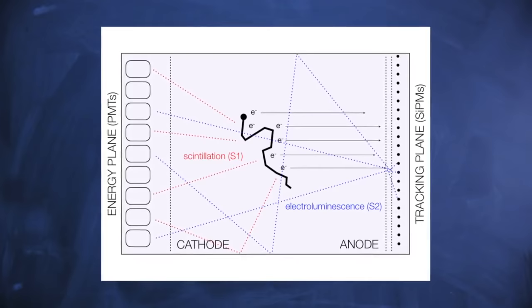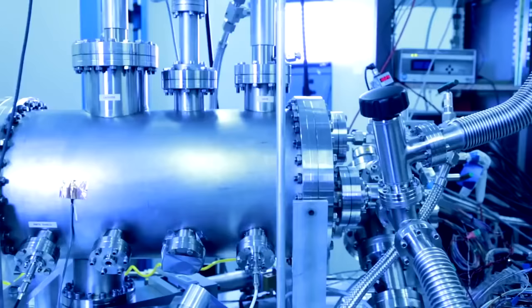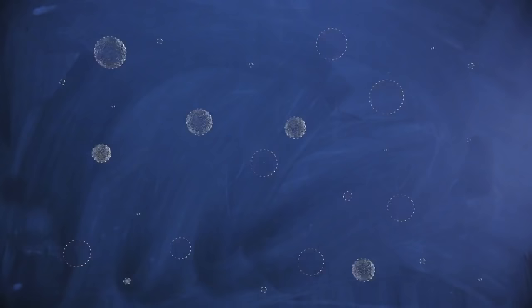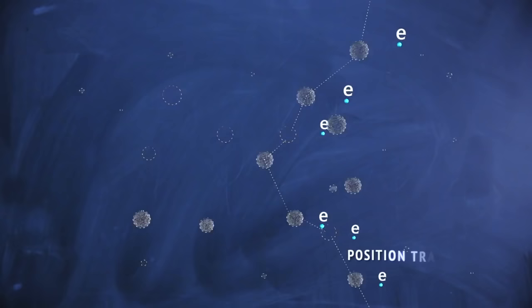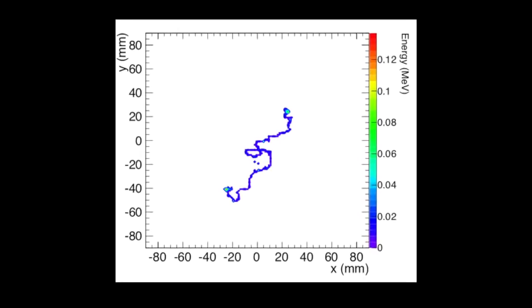NEXT is a simple idea. This chamber is a pressure chamber. Basically, it's a pot at high pressure in which you fill a lot of xenon. Xenon is a gas that has the capability of scintillating, producing ultraviolet light.